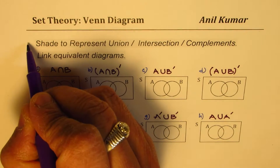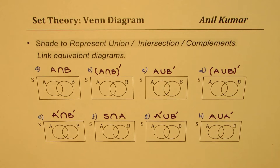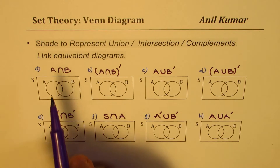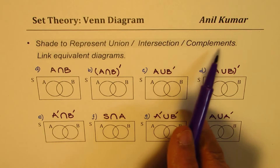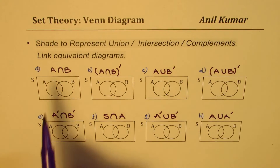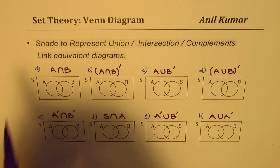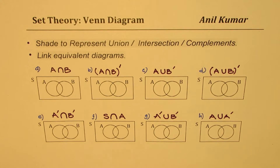I have about eight Venn diagrams to discuss. We will actually shade them to represent union, intersection, and complements — complements means 'not that set'. Then what you need to do is link equivalent diagrams. There are only a couple of them which will be equivalent, so after shading you will know which ones are equivalent.